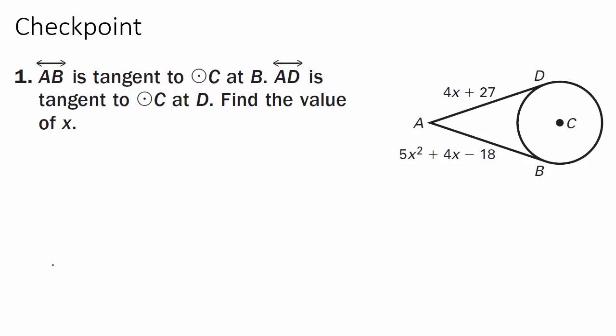We only have one checkpoint problem in this lesson, and that is yours. Line AB is tangent to circle C at B. Line AD is tangent to circle C at D. Find the value of X. That's it from me — I'll see you all soon.